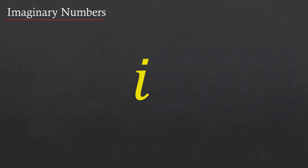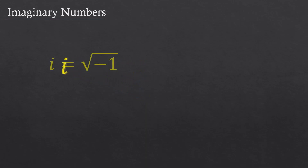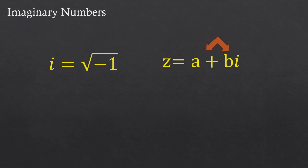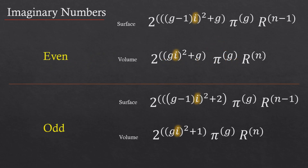I plays a very prominent role in Dimensionology, although its application is different than in complex numbers. The imaginary number i is defined as the square root of negative one, and complex numbers are comprised of two parts: the real part and the imaginary part. Dimensionology uses i in such a manner that even referring to i as an imaginary number may actually be a misnomer.